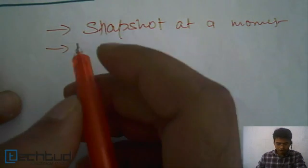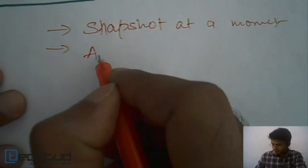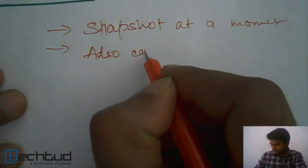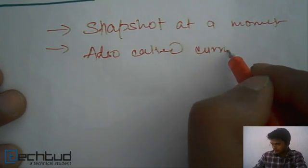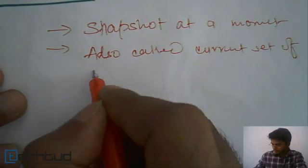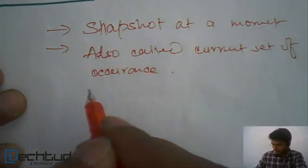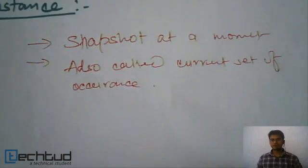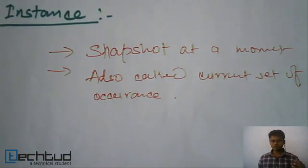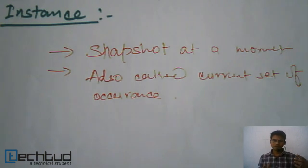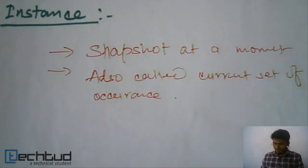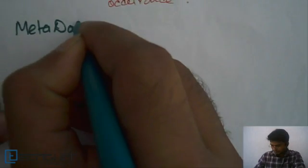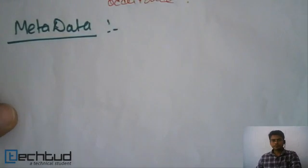An instance is also called the current set of occurrences. So when we say instance — instance of data or instance of a database — it means a snapshot of the database at a particular moment.